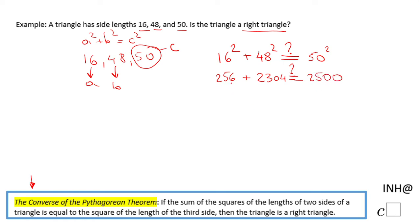So now I'm going to combine the two numbers on the left side. I have 256 + 2304, and that is 2560. And again, we notice these two guys are not equal. And if they are not equal, then the triangle is not a right triangle.